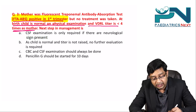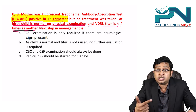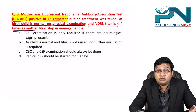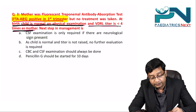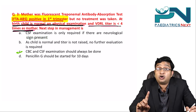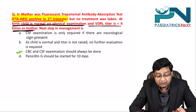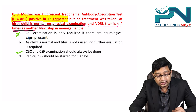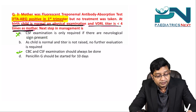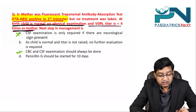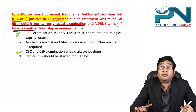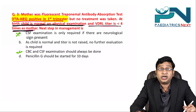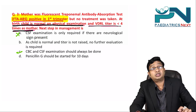Returning to the question: VDRL titer is less than four times the mother's (possible congenital syphilis), child is normal on physical examination. The correct next step is CBC and CSF examination. Other options — CSF only if neurological signs are present (false), no further evaluation needed (false), and starting 10-day penicillin immediately (false, since that depends on treatment history) — are all incorrect.